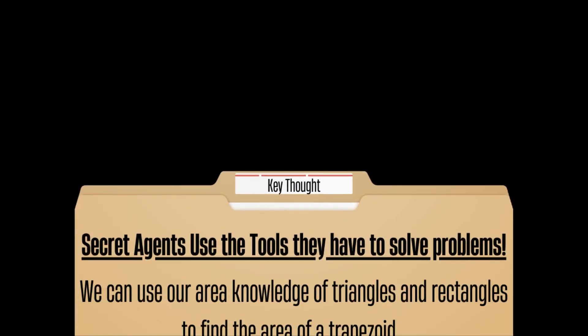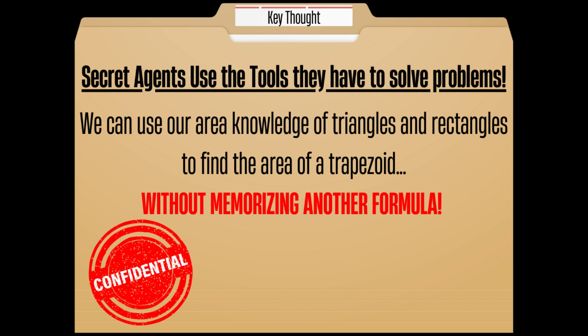Let's take a look at what our key thought for this lesson is. Our key thought is that secret agents use the tools they have to solve problems. If you remember that everything in area comes from length times width, that's where it all starts, trying to cover it with an array to figure out our square units. Then we can use that along with our triangle knowledge to help us solve other different shapes.